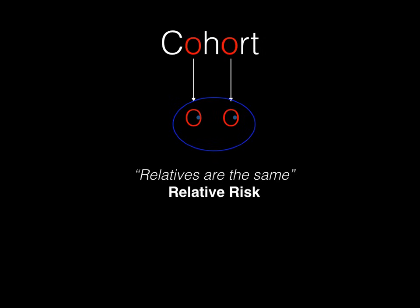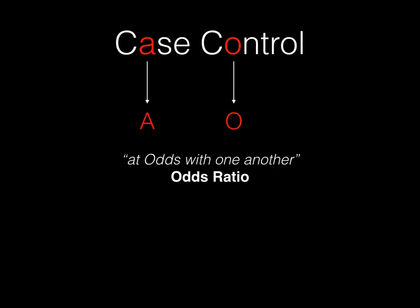Now let's compare that to a case control study. Case control has two different vowels — an A and an O. In other words, these letters are at odds with one another; they are not the same, they are not relatives, so they don't give you the relative risk. Instead, they are at odds with one another — they give you the odds ratio. High yield: odds ratio and case control go together. The next thing we need to understand is which direction case control studies follow their participants.